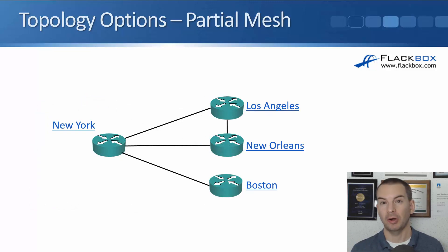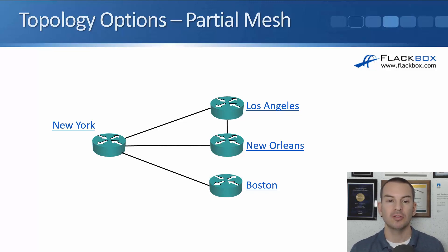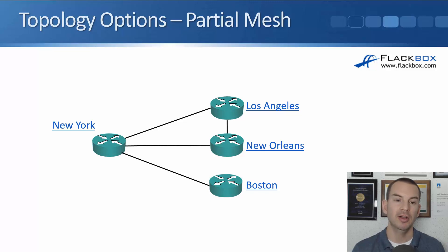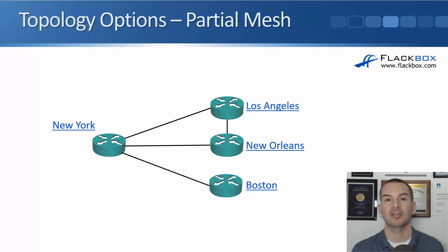The last topology is a partial mesh, which is a trade-off between the other options. Here, New York acts as a hub site with branches in Los Angeles, New Orleans, and Boston. But Los Angeles and New Orleans also have a direct connection between them. This is a bit higher cost than a pure hub and spoke, but you get some of the advantages of more direct connectivity between some of your branches.